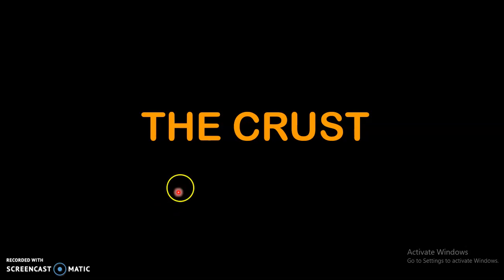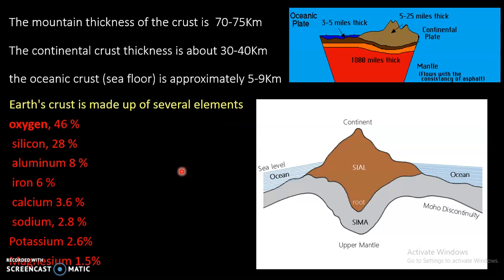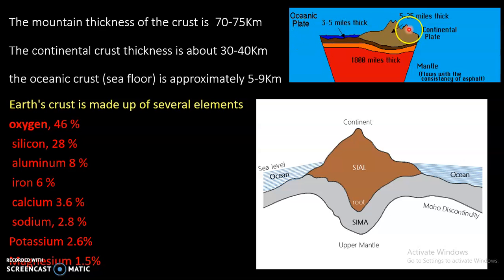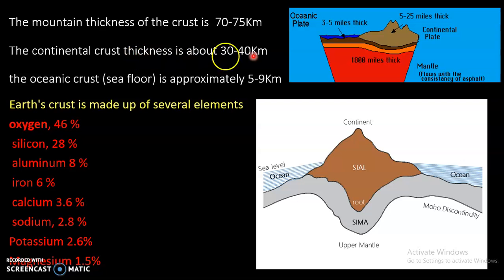Next is the crust, the first layer of the Earth. The crust is the outermost shell of the Earth. It is highly made up of silica. The crust is variable in thickness according to the area. The mountain thickness of the crust is 70 to 75 kilometers. In this diagram we can see there are two types of crust: continental crust and oceanic crust, also called continental plate and oceanic plate. The continental crust thickness is about 30 to 40 kilometers and the oceanic crust is about 5 to 9 kilometers.